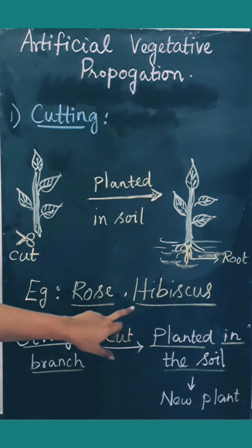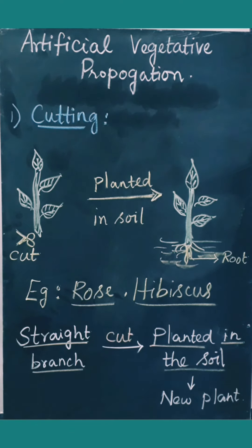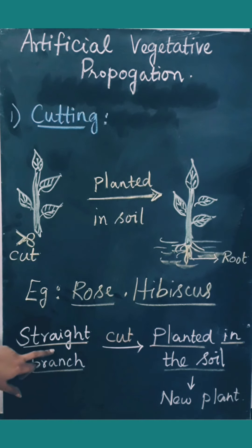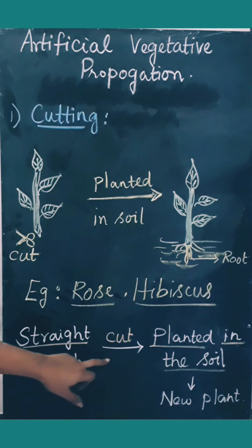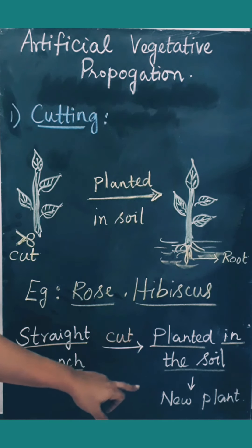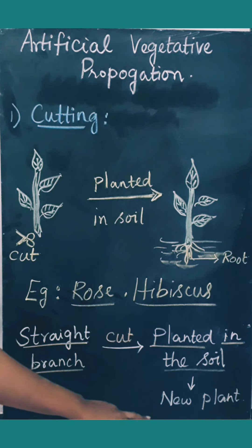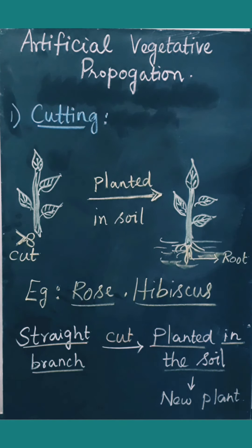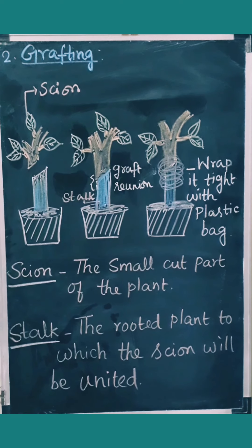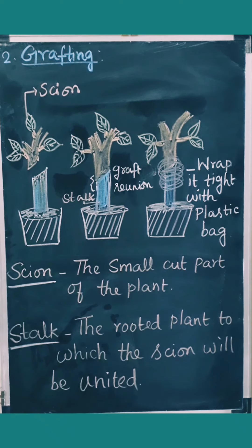This cutting method of artificial vegetative propagation is carried out in rose and hibiscus. You could have seen your parents bringing a rose cutting or a hibiscus cutting and planting it in soil, watering it regularly. The straight branch is cut, planted in the soil, and it becomes a new individual plant.